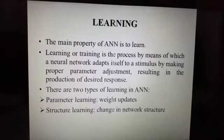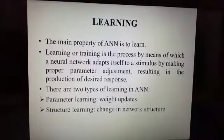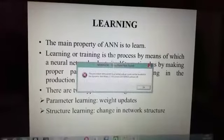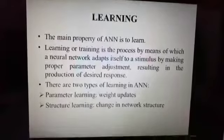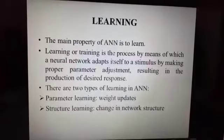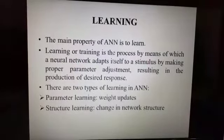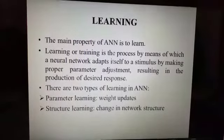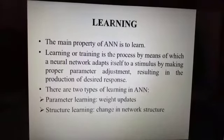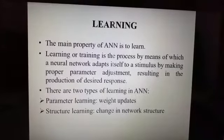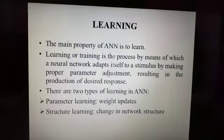This results in the production of desired response. There are two types of learning in ANN: parameter learning and structural learning. In parameter learning, it updates the connecting weights in the neural set, and in structural learning it focuses on changing network structure.